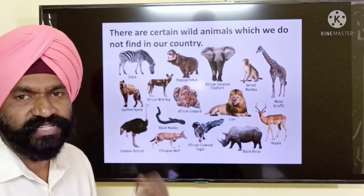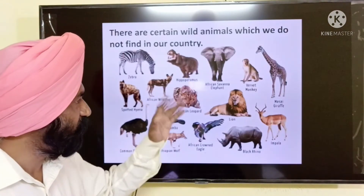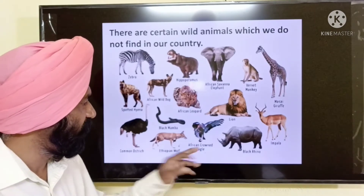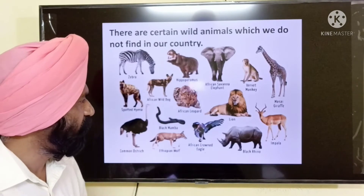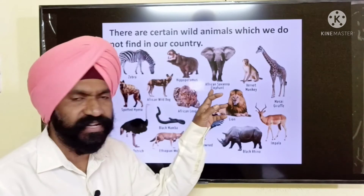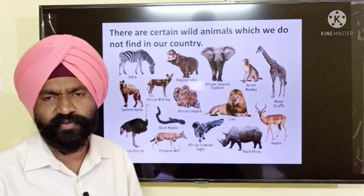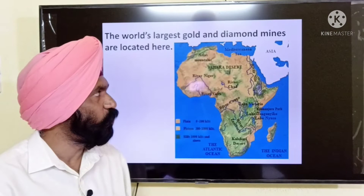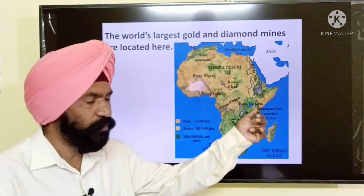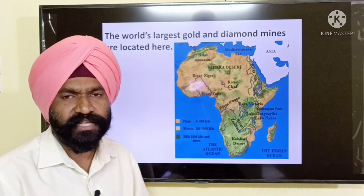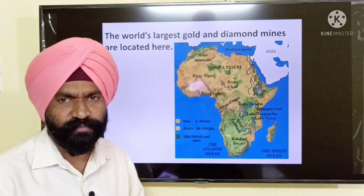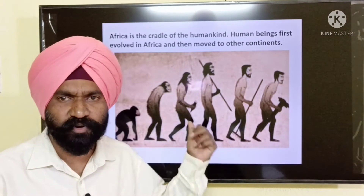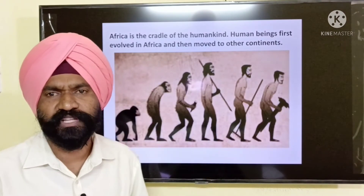There are certain wild animals which we don't see in our country. Animals found in the forest regions of Africa include the black rhino, African crowned eagle, African wild dog, African leopard, and African savanna elephant — some animals are only found in the forests of Africa and not in India. The world's largest gold and diamond mines are also available in Africa, around Mount Kilimanjaro. Africa is considered the cradle of human civilization because the first early humans were born here and later spread over the total parts of the world.